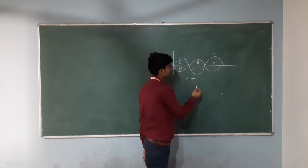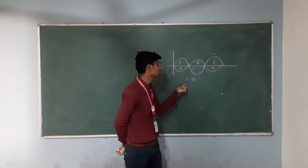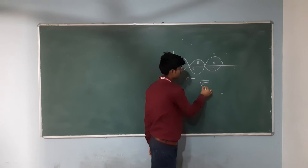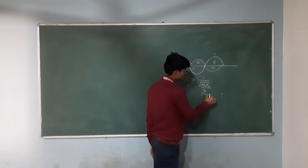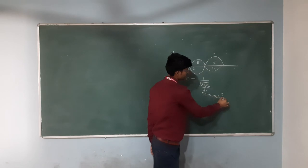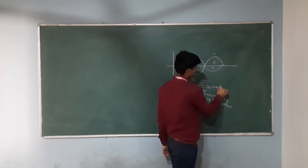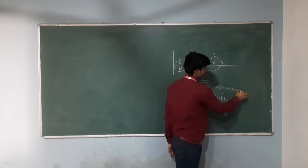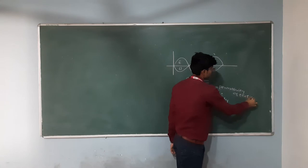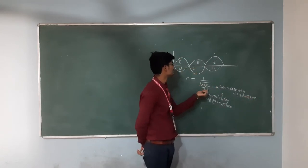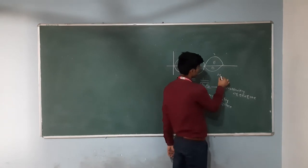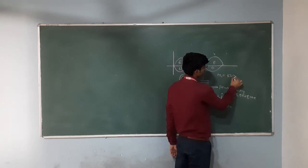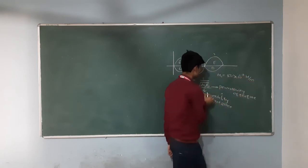Maxwell was doing some experiments and he got the formula for the velocity of light: C equals to 1 divided by the square root of μ₀ε₀. Here, μ₀ is the permeability of free space, which is related to the magnetic field. The value of μ₀ equals 4π × 10⁻⁷ henry per meter.